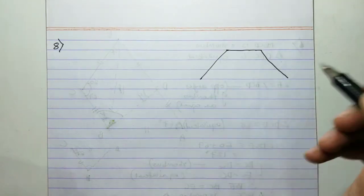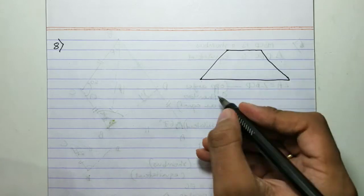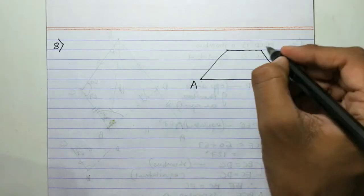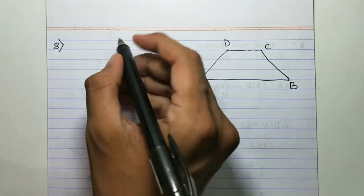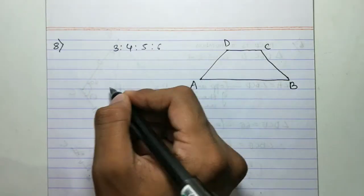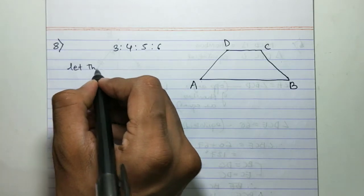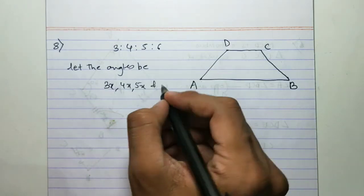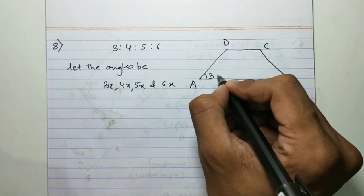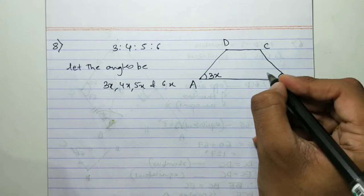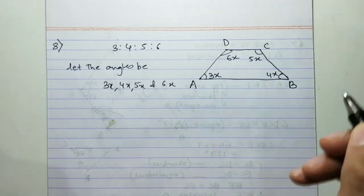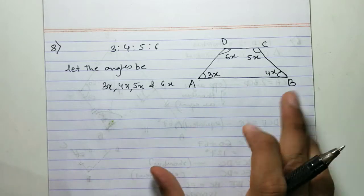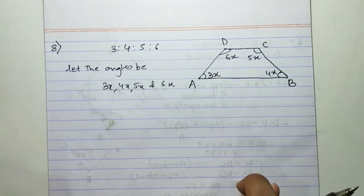I will draw a trapezium directly and name the angles. Let's say this is A, B, C, D and the angles are in the ratio 3:4:5:6. So let the common multiple be x, and let the angles be 3x, 4x, 5x, and 6x. We have to prove that this is a trapezium.